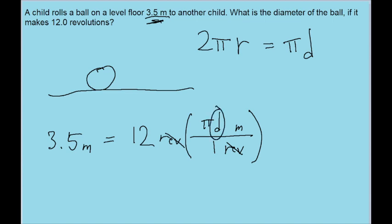Though remember, this d here is what we actually want to solve for. So let's algebraically rewrite this to solve for d. So it's going to be 3.5 meters of travel distance divided by 12 revolutions times pi.